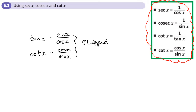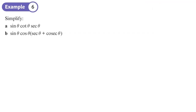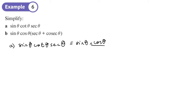Part a: simplify sine θ · cot θ · sec θ. Cot is the reciprocal of tan, so that's cos over sine. Sec is one over cos. Writing sine as sine over one, the sine cancels, and the cos cancels, so we're left with just one — everything cancels out.